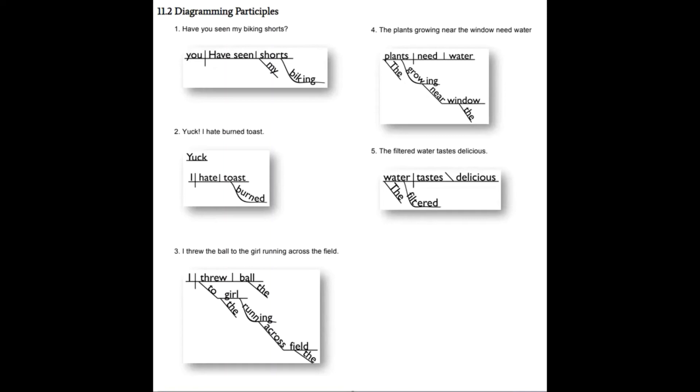Number two: 'I hate burnt toast.' 'I' is the subject, 'hate' is the verb, and 'toast' is the direct object, modified by the participle 'burnt.' Number four: 'The plants growing near the window need water.' Which plants? The plants growing near the window. The adjective is 'growing,' which is a participle diagrammed on a curved line, with -ing taking the straighter spot. 'Near the window' is the prepositional phrase modifying 'growing.'